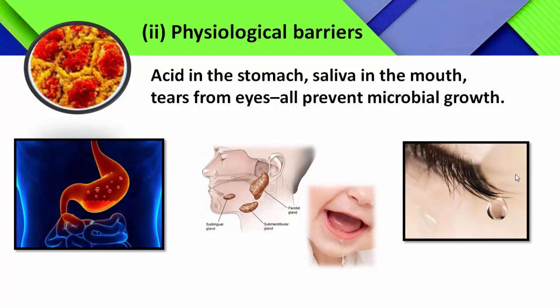Physiological barriers are of three types. The first example is acid in the stomach. The acid secreted in the stomach is HCl, that is why the gastric juice of the stomach is acidic in nature. The HCl is secreted by the gastric glands of the stomach, and this HCl represents a physiological barrier.